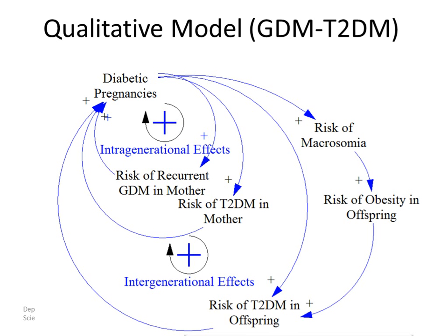In areas like system dynamics, we've long had a tradition of building up models at the qualitative and quantitative level out of pieces that people from a variety of backgrounds can understand. We use causal loop diagrams to indicate the relationship between different factors within a system — for example, that increasing diabetic pregnancies will tend to increase the risk of recurrent gestational diabetes within a mother for future pregnancies. We draw out stock and flow diagrams that characterize the population and characterize through flows people's movement between different health states.